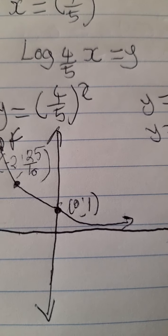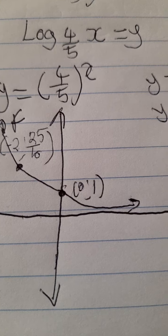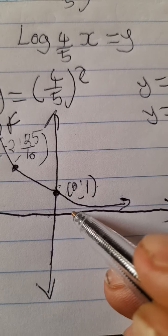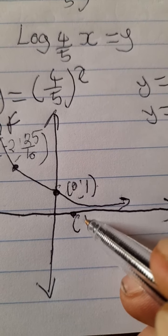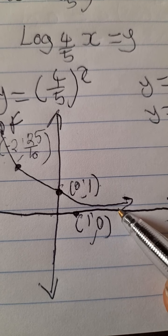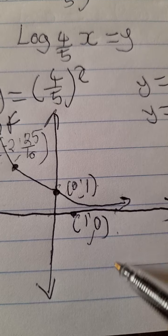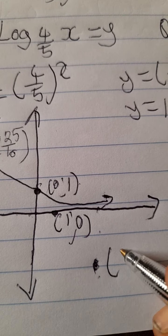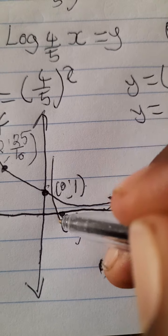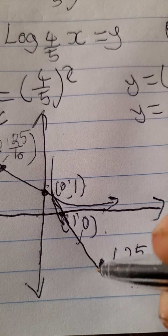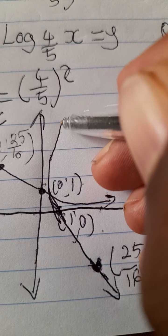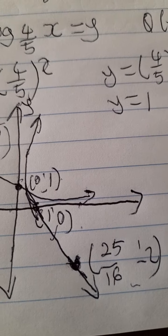We label this the graph of f. To sketch the inverse, you simply swap the coordinates. Since f has the point (0, 1), the inverse has the point (1, 0). For Q at (negative 2, 25 over 16), the inverse has the point (25 over 16, negative 2). We join these points to draw the inverse curve. The y-axis is labeled y and the x-axis is labeled x. That's the sketch for 5.3.